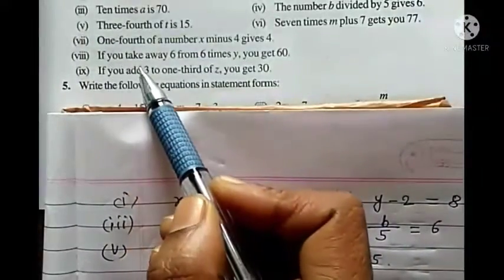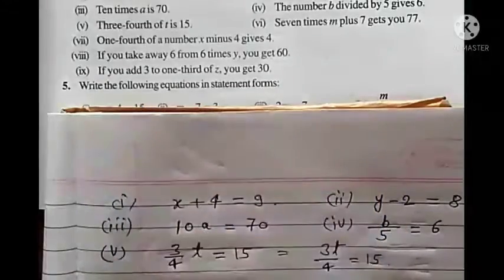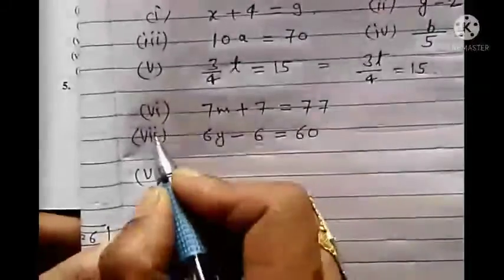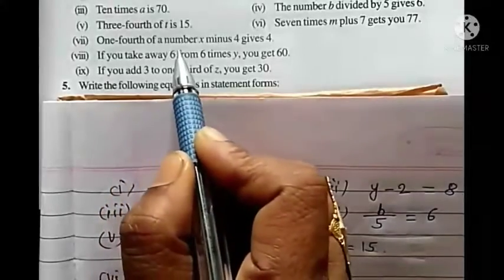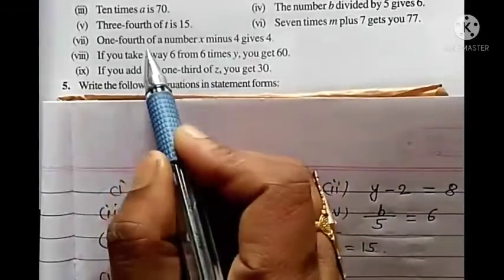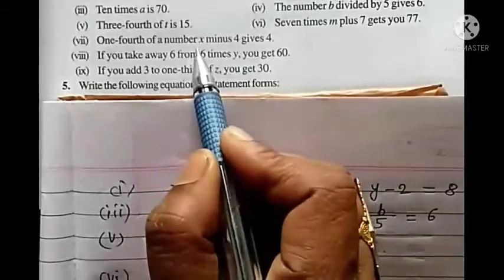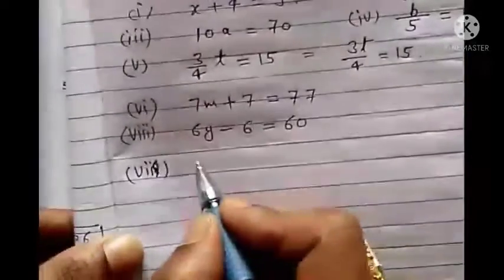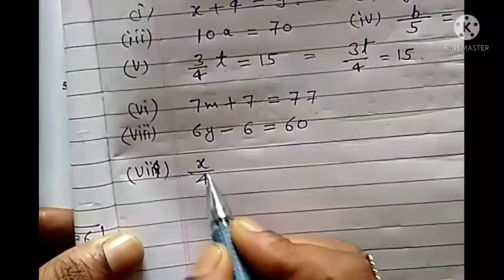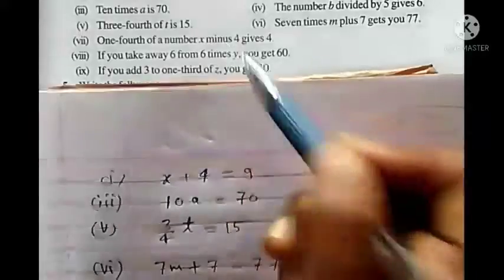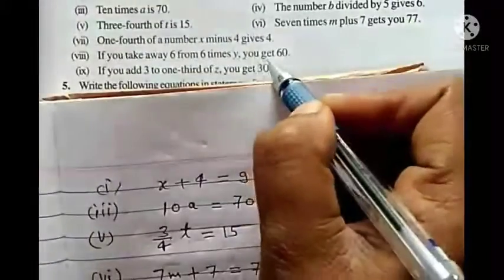Now eighth (done before seventh): 1 fourth of our number x minus 4 gives 4. So 1 fourth of x means x upon 4. Then x upon 4 minus 4 equals to 4. That is the equation.